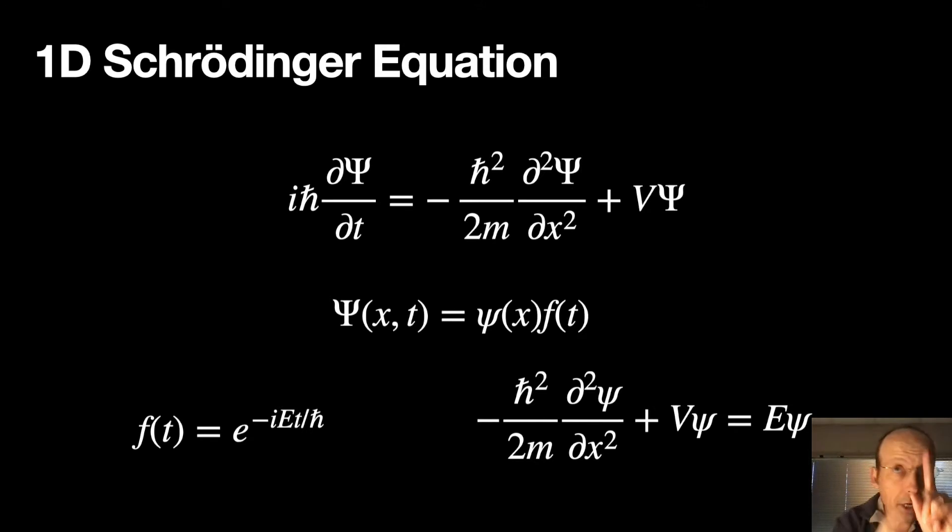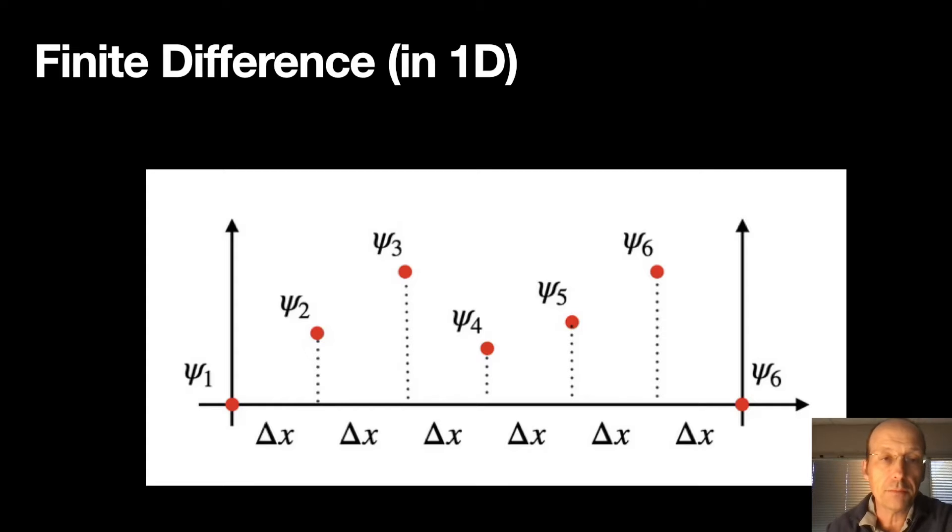Now, one of the ways we solve this in one dimension was with the finite difference method. So the idea was to take our space and break it into finite elements of the wave function, psi 1, psi 2, psi 3, psi 4, and so forth like that.